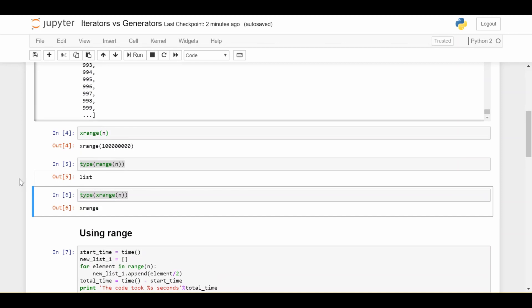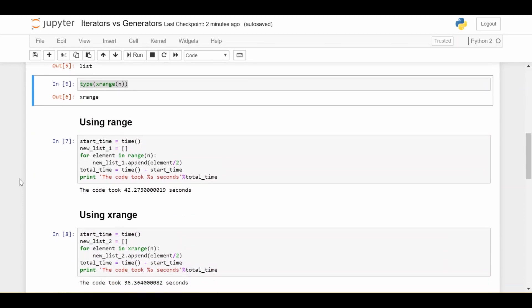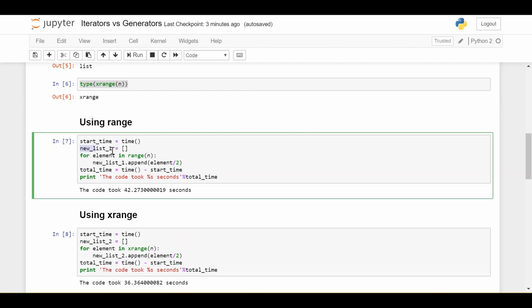So that's the conceptual difference as we saw on the whiteboard. Let's see how we perform time-wise using range versus xrange. So we have two very small code snippets here. And we're doing a very simple operation. We're just going to be taking each element in the range or the xrange and dividing it by 2, and taking that result and putting it in a new list. So let's look at the range code first. We start a timer. We initialize a new list to empty. For every element in range n, so 0, 1, all the way to 100 million minus 1, we go ahead and append that element divided by 2 to our new list. So our new list is just half of these elements. We get the time at the end and we print it out. We see that it took about 42 seconds for us to get through these 100 million numbers.